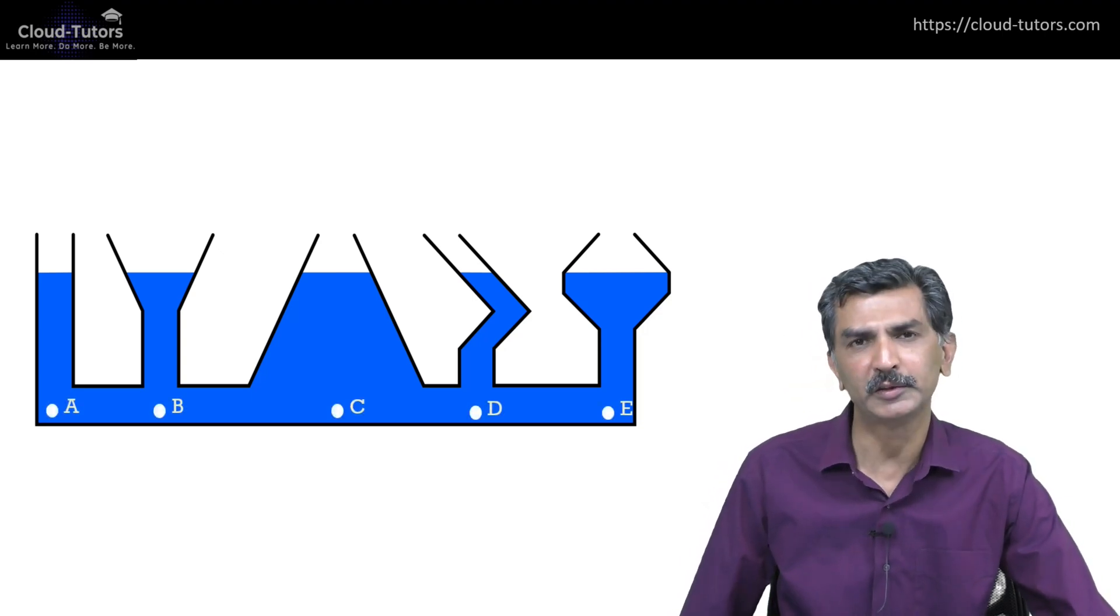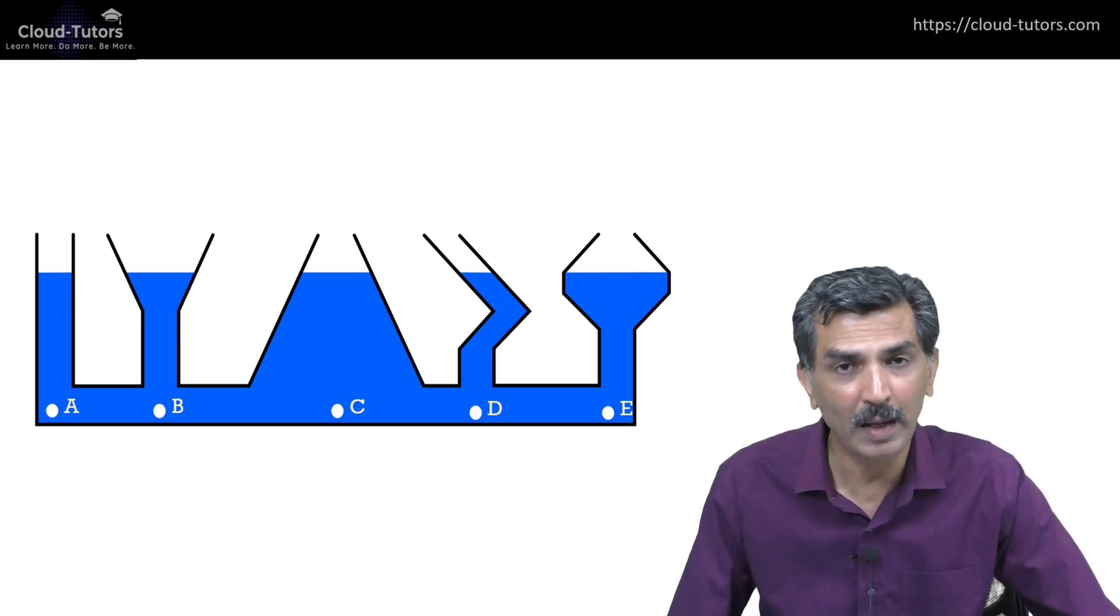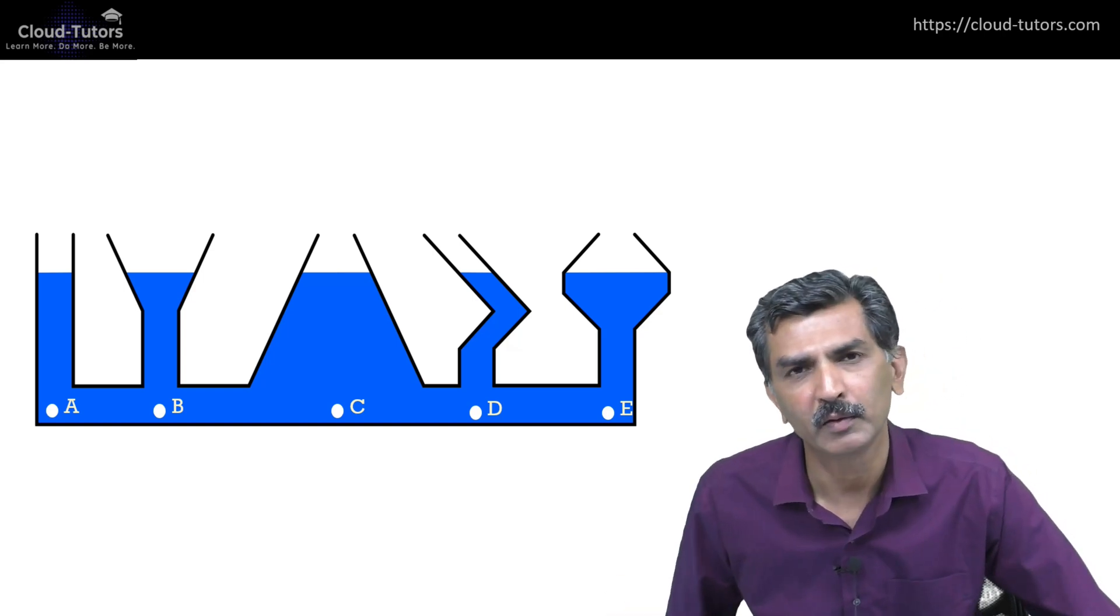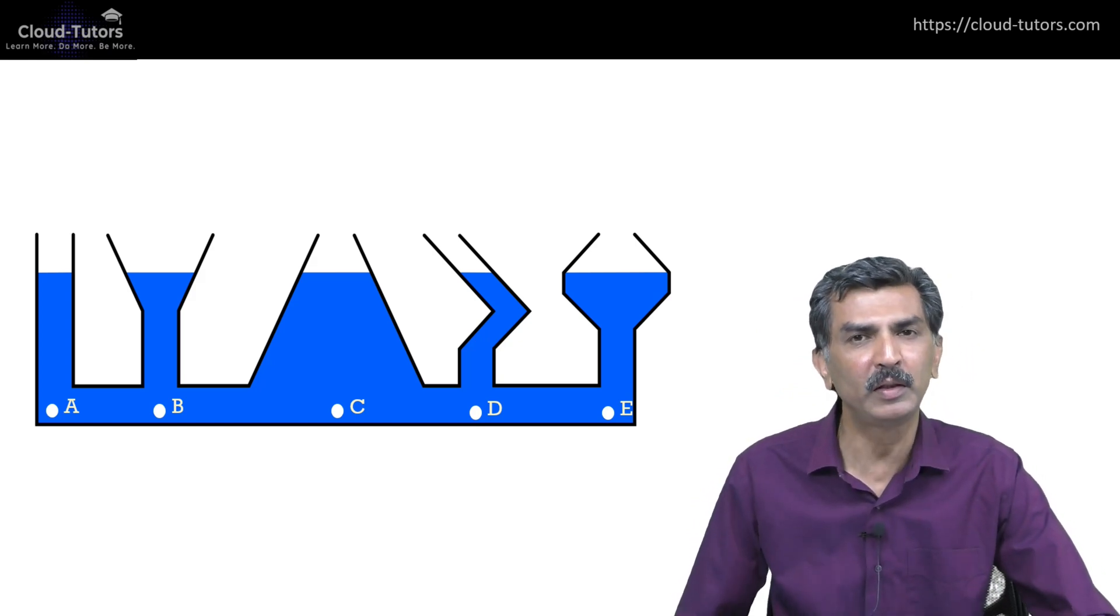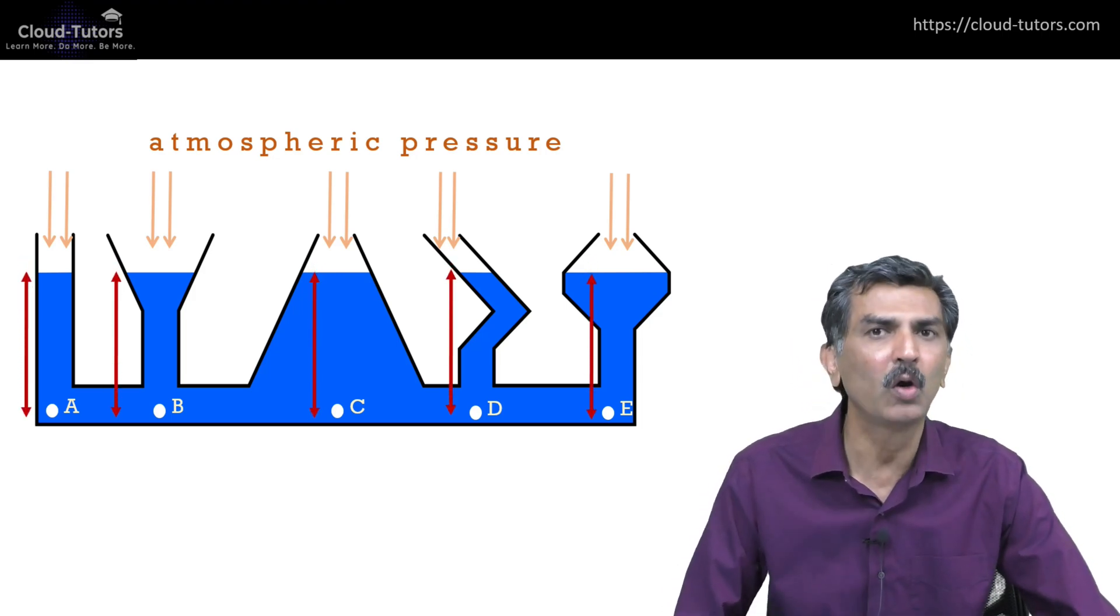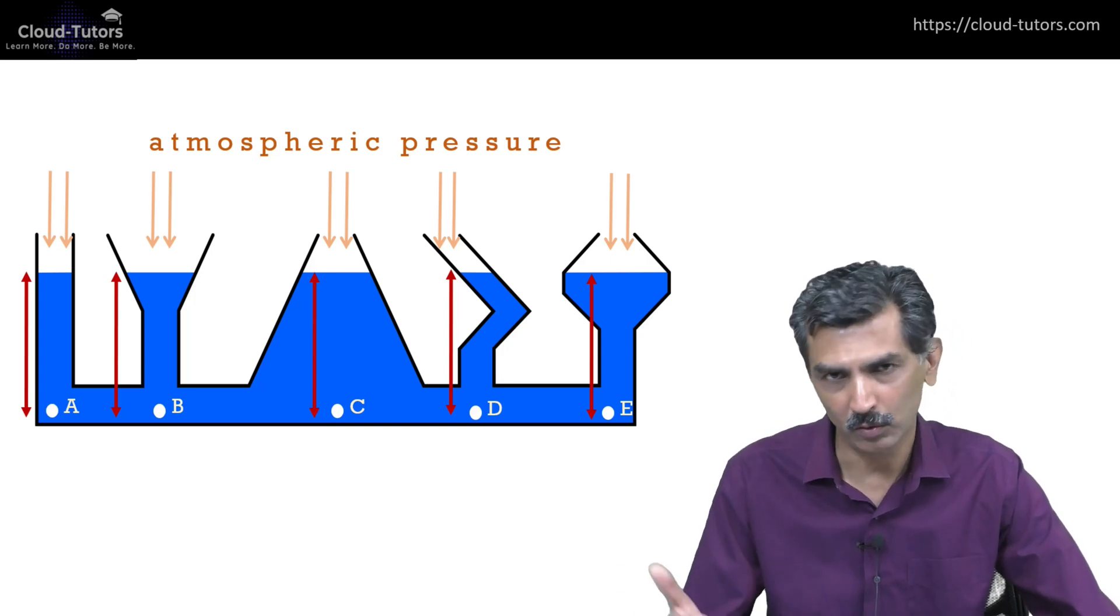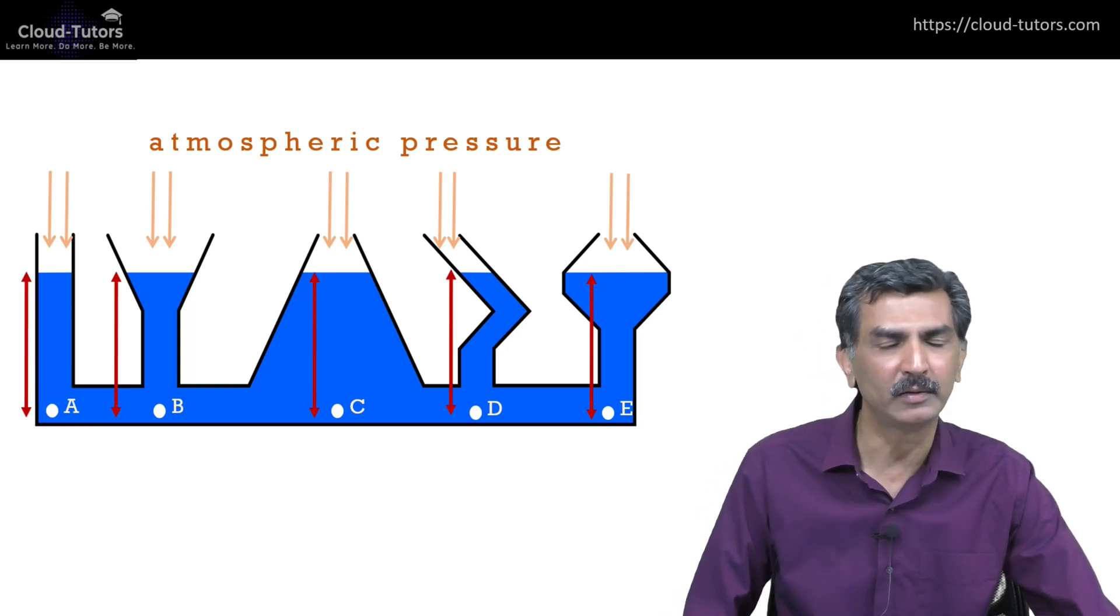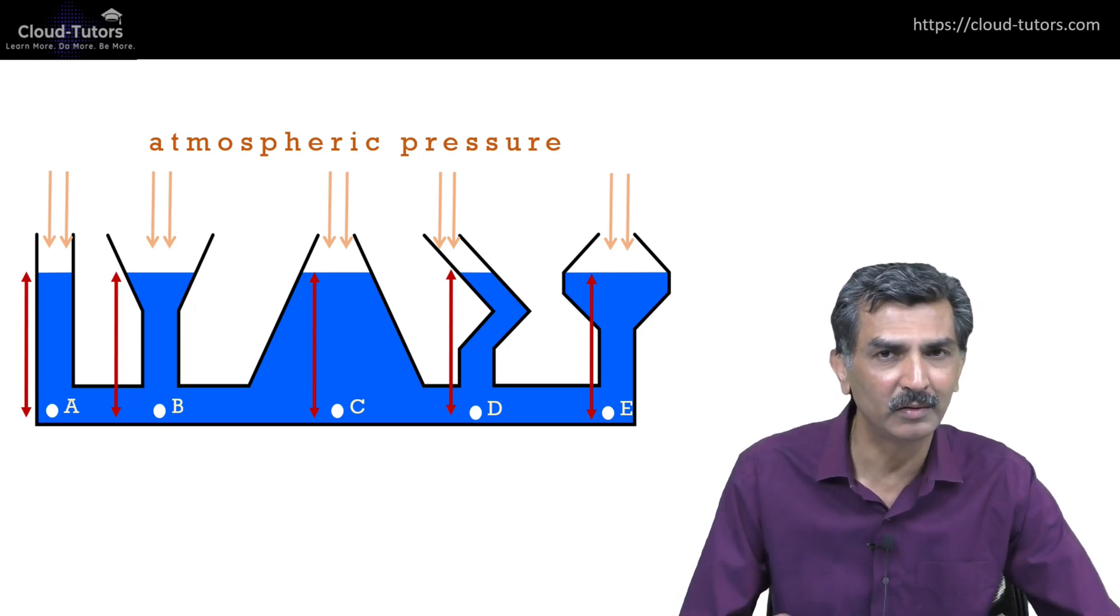Now if you consider five points at the bottom of each of these vessels - A, B, C, D, and E - they all happen to be at the same depth or horizontal level. Let's consider the pressure at these points. The pressure at these points happens to be a combination of two things: one is the atmospheric pressure acting on the surface of the liquid; the other is the pressure of the vertical liquid column. So the sum of these two is what gives you the pressure at point A or point B. And because the vertical length of the liquid column in all five vessels is the same, the pressure at all these points is the same.